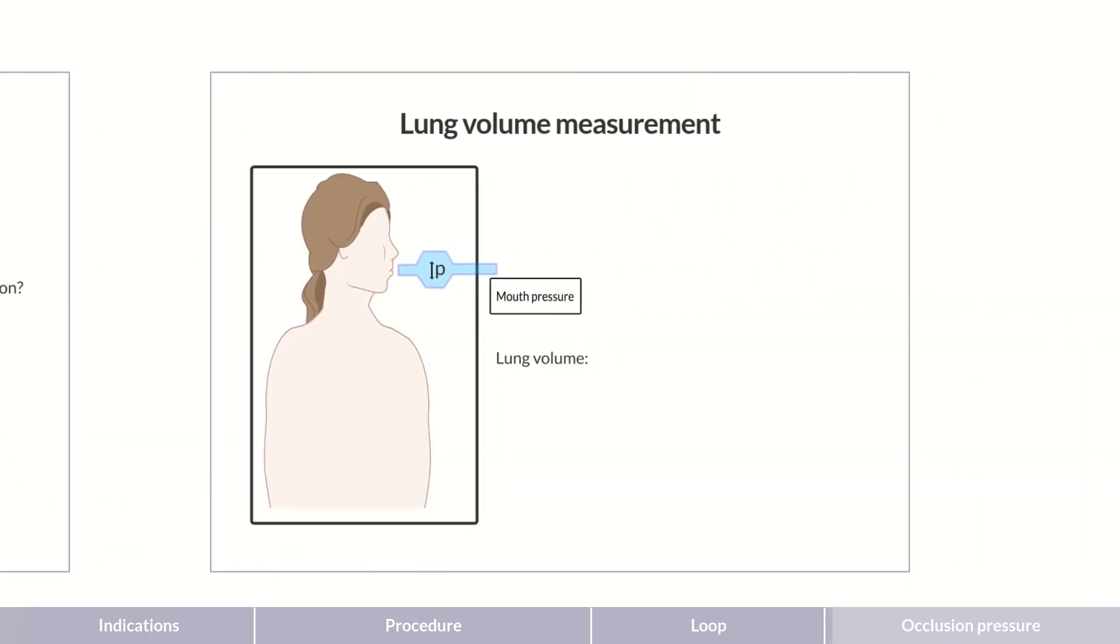To calculate the lung volume, we need to know the displaced volume, as well as the relative change in volume in the lung. The latter can be determined using the pressure sensor in the mouthpiece. After the patient has breathed normally for a while, occlusion pressure is measured.